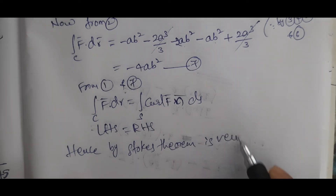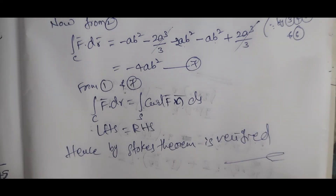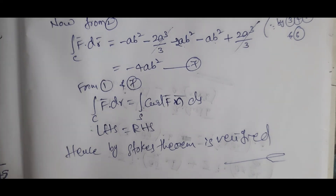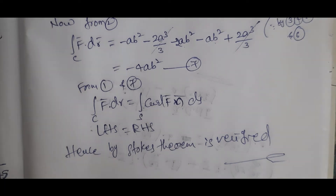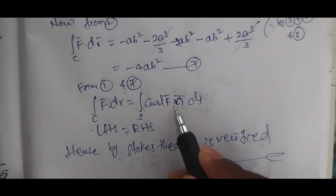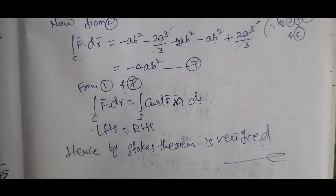We computed RHS first to get the result quickly, then verified LHS through the longer path integration process. Both sides equal −4ab², confirming the theorem. Please subscribe to the channel, like, and share. Thank you.